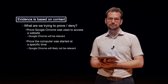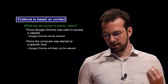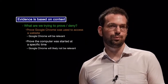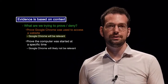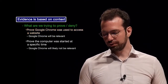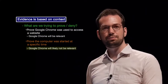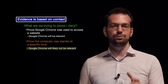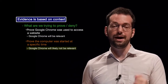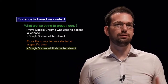Electronic evidence is based on context — evidence always has to be evaluated in context. We need to figure out what exactly we're trying to prove or deny. For example, if we want to prove that Google Chrome was used to access a website, data relating to Google Chrome will be relevant. But in another case, if we want to prove the computer was started at a specific time, Google Chrome will likely not be relevant. So we need to think about context — when is the data relevant to the case?